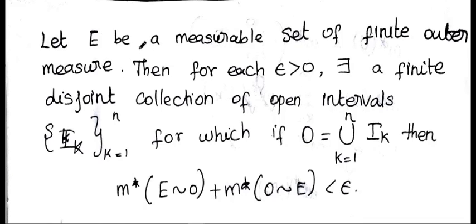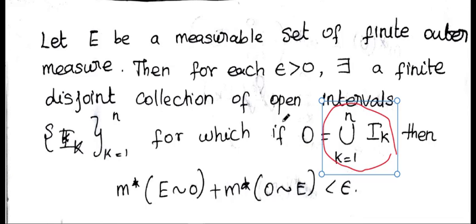Why? What is the measurable set of finite outer measure? E is a measurable set of finite outer measure. Then for each epsilon greater than 0, there is a finite disjoint collection of open intervals whose union is O, and M* of (E \ O) plus M* of (O \ E) is less than epsilon for each epsilon greater than 0.